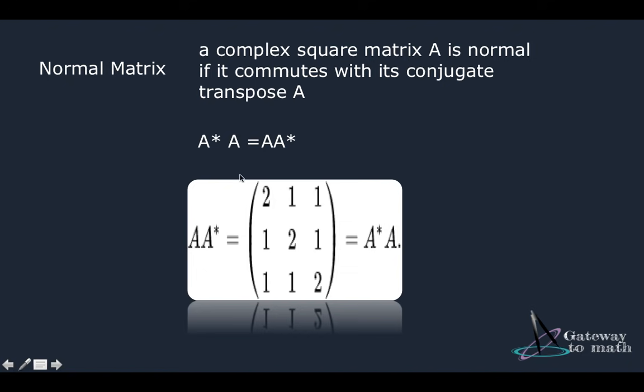Normal matrix is one in which when you multiply the conjugate transpose of a matrix with itself, it commutes. You remember the commutative property, we'd say AB equals BA. So you multiply A into B and it will be equal to when you multiply B with A. So similarly, a normal matrix is one in which when you multiply the original matrix A with its conjugate transpose and then if you commute it, so you reverse the order, it's still the same. So that's a normal matrix.